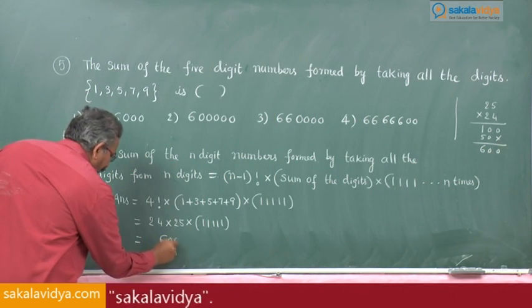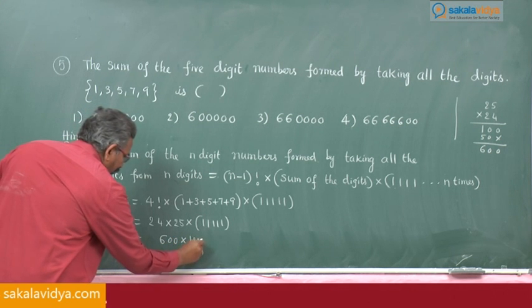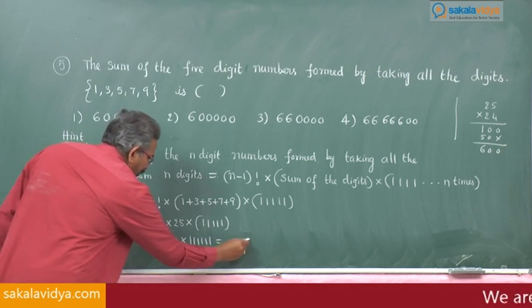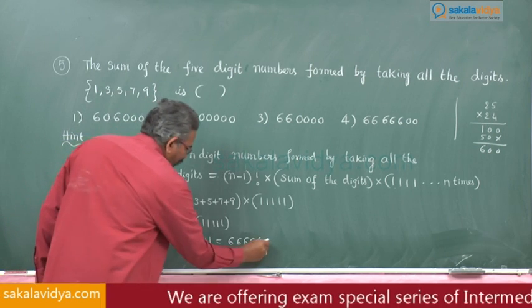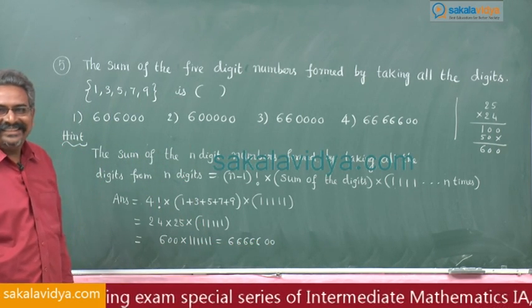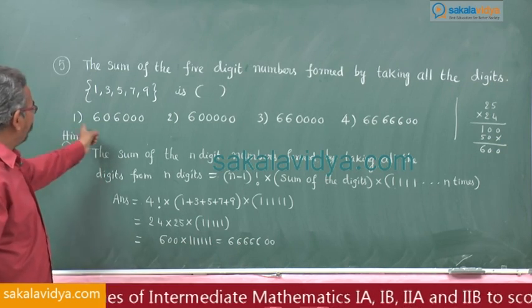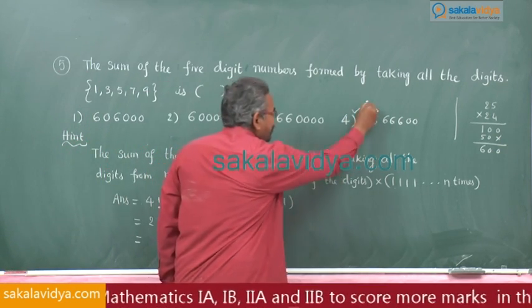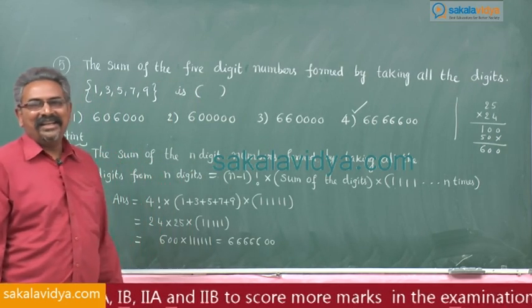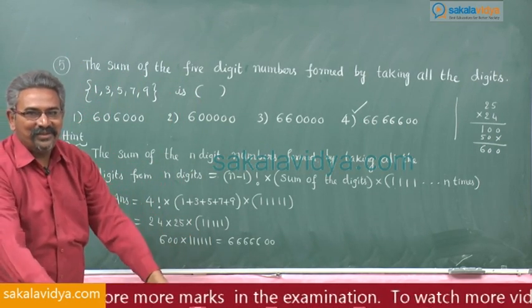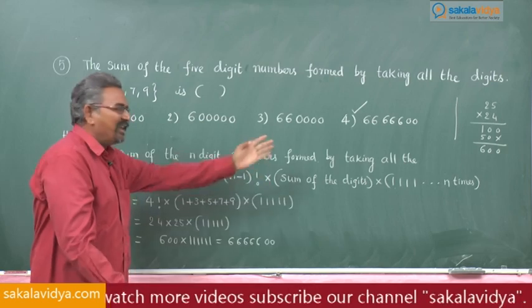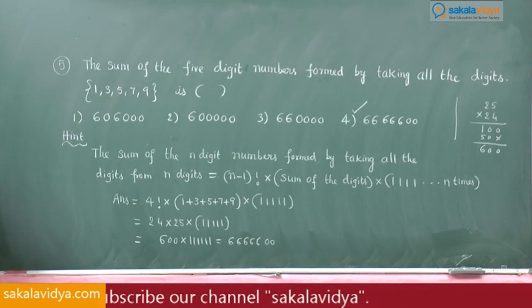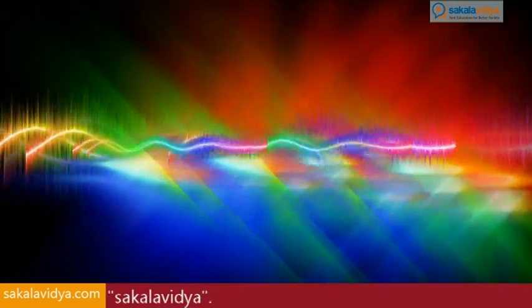Now, 600 multiplied by 11111, that means 66666, how many 6's? 5 sixes, 2 zeros. Do you expect the answer? Yes, of all the options, fourth one is the answer. So, instead of adding 120 numbers simply by using this shortcut within less than 30 seconds, we can solve this problem.